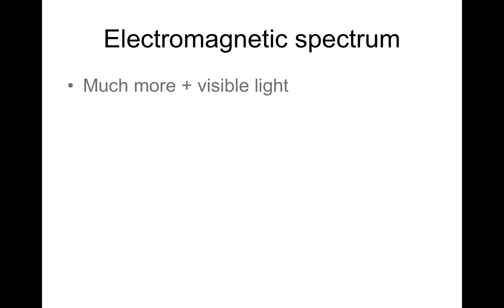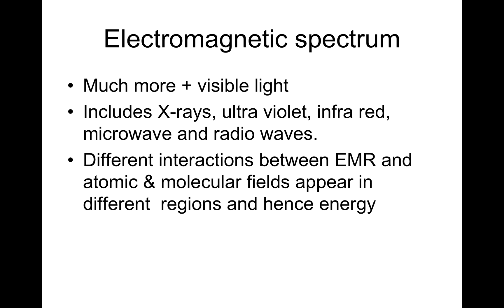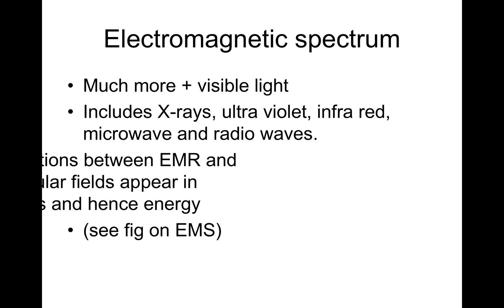Electromagnetic spectrum: normally we joke about this by saying it is much more plus the visible light, implying that the visible light we look at is an extremely tiny part of the electromagnetic spectrum. When you look at it all, it includes x-rays, ultraviolet, infrared, microwave, and radio waves. Different interactions between electromagnetic radiations and atomic or molecular fields appear in different regions and hence different energies.